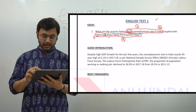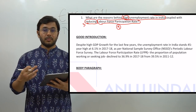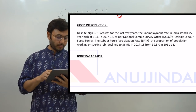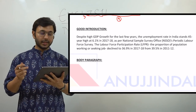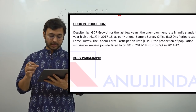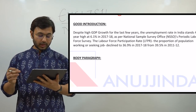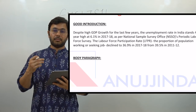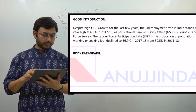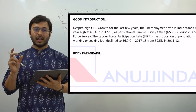I received a good introduction from one of the students, so I put it here so that if you are analyzing your own performance, you can go through a good example. The introduction reads: 'Despite high GDP growth for the last few years, the unemployment rate in India stands at a 45-year high of 6.1 percent as per NSSO's Periodic Labour Force Survey. The LFPR — the proportion of population working or seeking a job — has declined.'